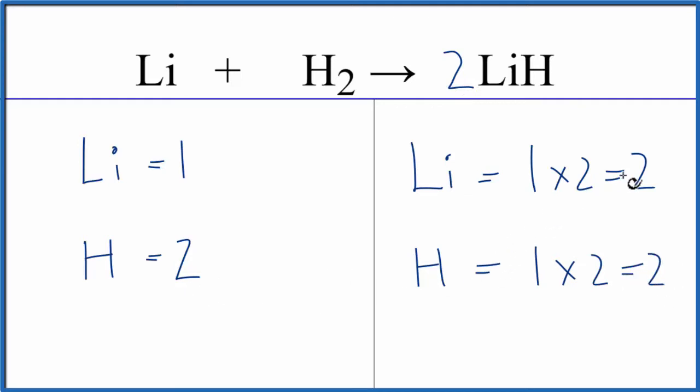So we've balanced the hydrogen atoms but the lithiums are not balanced. That's okay because all we need to do is have two lithiums here to balance these two. We can put a coefficient of two in front of the lithium.